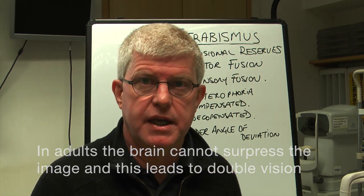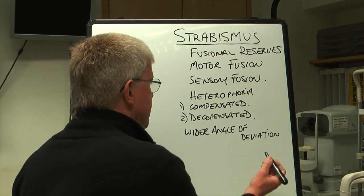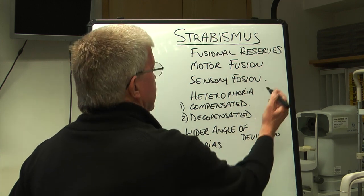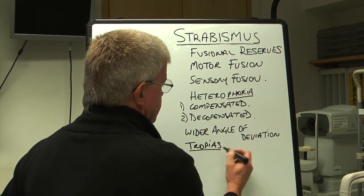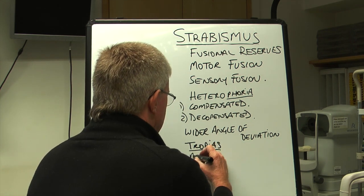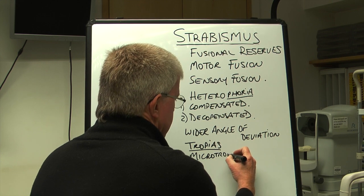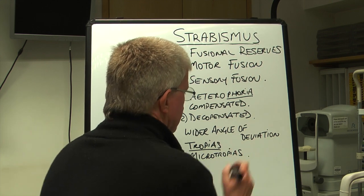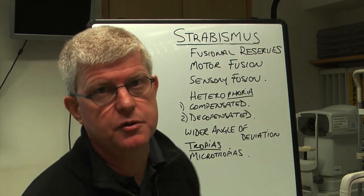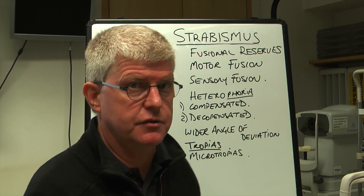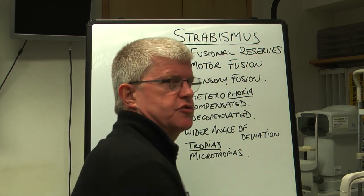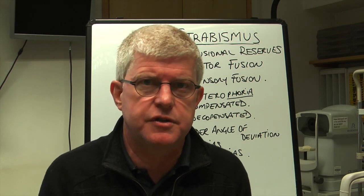Strabismus relates to a wide angle of deviation, known as tropias, whereas the smaller deviations are phorias. There are two types of tropias: main tropias, and microtropias, which are smaller angles of deviation — less than five degrees. These microtropias are very difficult to identify, and you have to do certain cover tests in order to expose them, whereas the wider angles of deviation are usually fairly observable just by looking at someone.